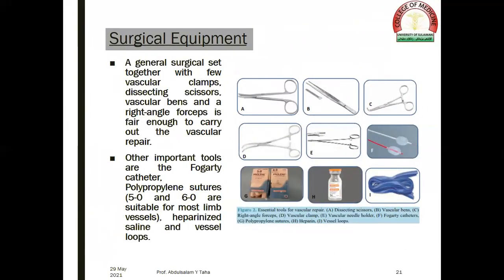Surgical equipment: a general surgical set together with vascular clamps, dissecting scissors, vascular pins, and right-angle forceps is sufficient to carry out vascular repair. Other important tools are the Fogarty catheter, polypropylene sutures of 5-0 and 6-0 sizes suitable for most limb vessels, heparinized saline, and vessel loops.